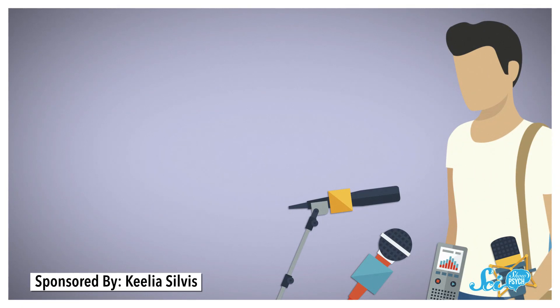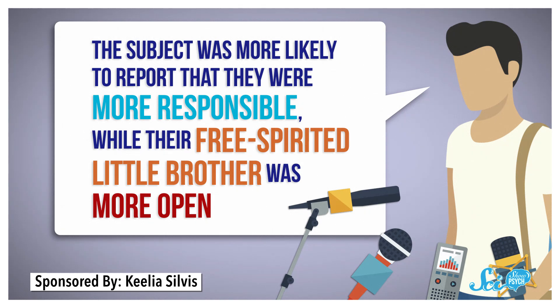One of the problems with those smaller studies was that they often depended on one sibling self-reporting their personalities and those of their siblings. Like what I just did. So if the researchers were interviewing an oldest child, for example, the subject was more likely to report that they were more responsible, while their free-spirited little brother was more open. But the difference between the way someone sees themselves and how they see someone else can really affect the results of a survey.